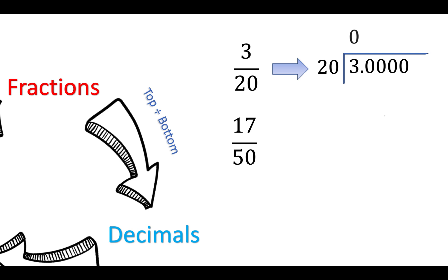And I do, how many twenties go into three? Zero, remainder three. How many twenties go into thirty? One, remainder ten. How many twenties go into one hundred? Five. And the answer is zero point one five. There are no more remainders. We have done the division.